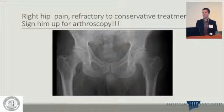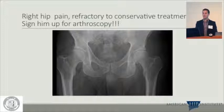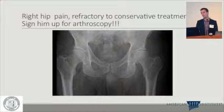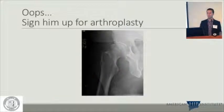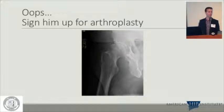Here's a case to emphasize the false profile's importance: a man with right-sided hip pain. On the AP someone might say he has a rim lesion, borderline dysplasia, and consider arthroscopy. But he's a 50-year-old man. When you get the false profile, he has anterior wear — he's been edge-loading for a while. So arthroscopy alone would not be appropriate.